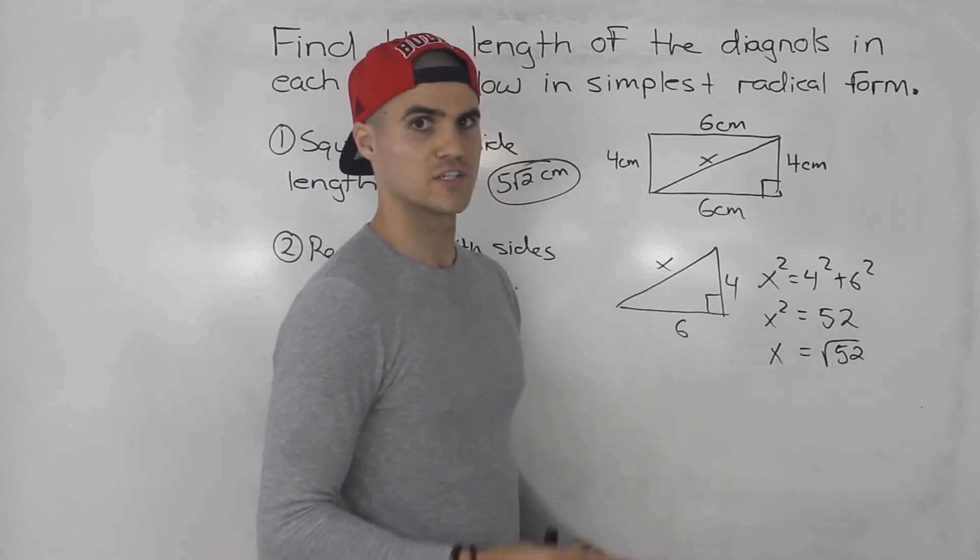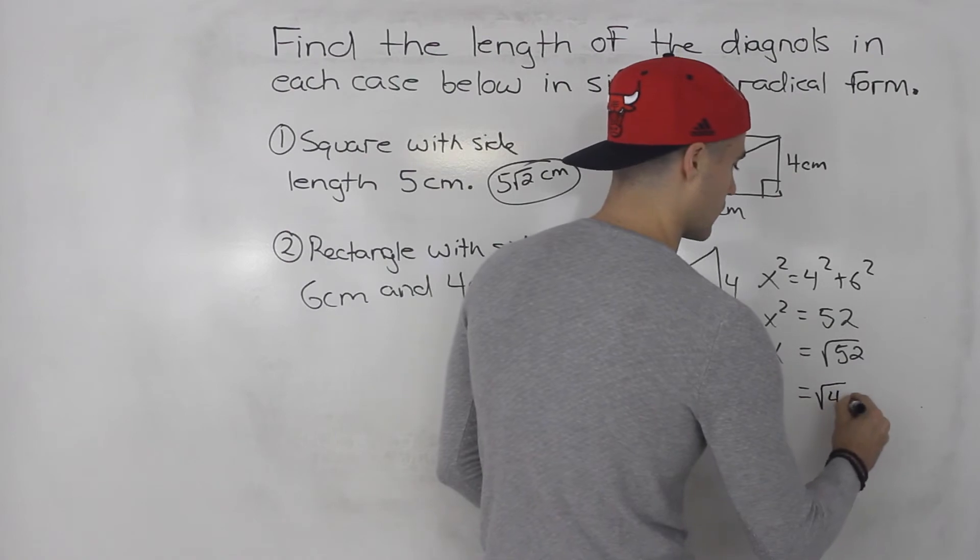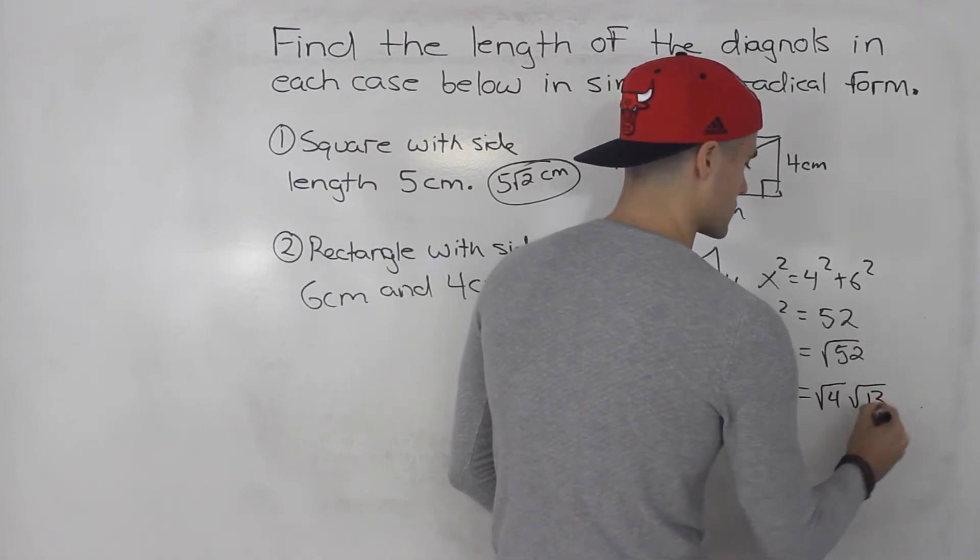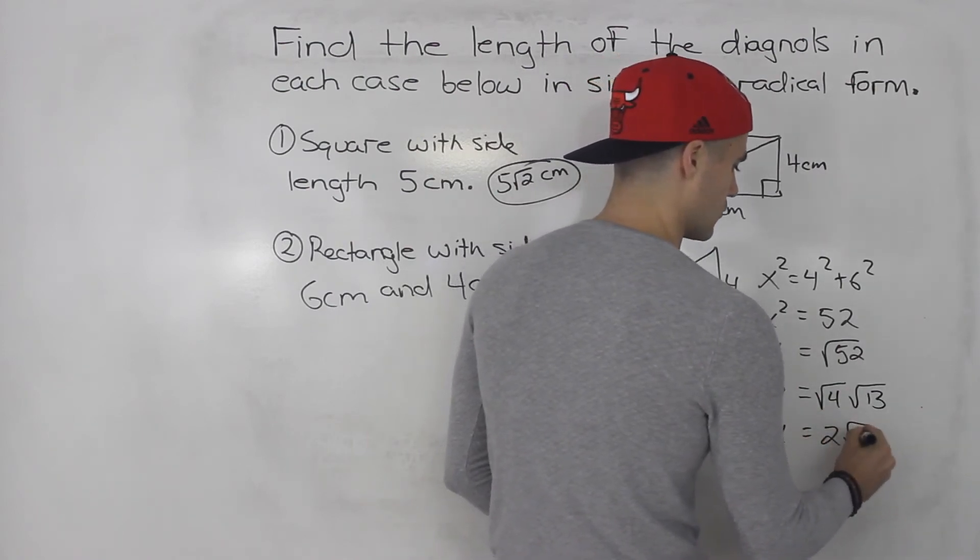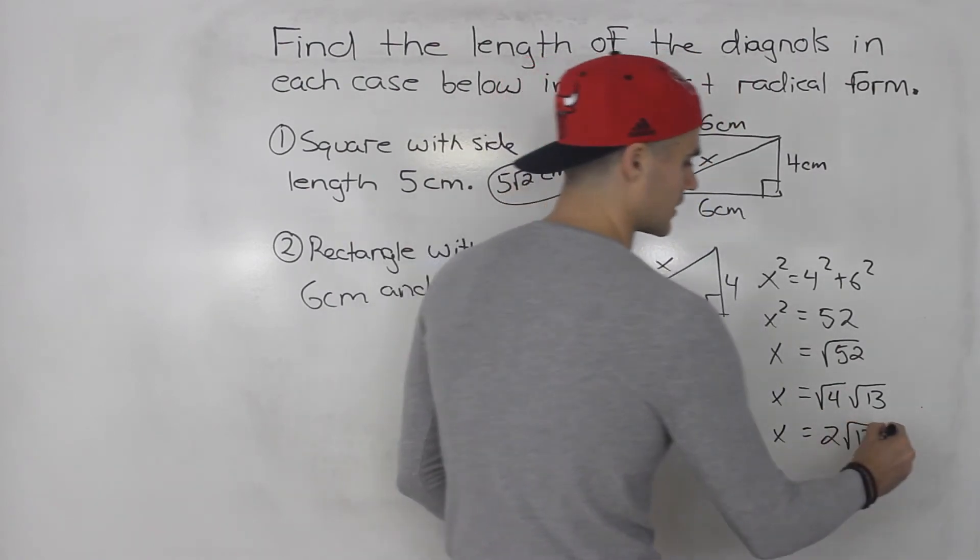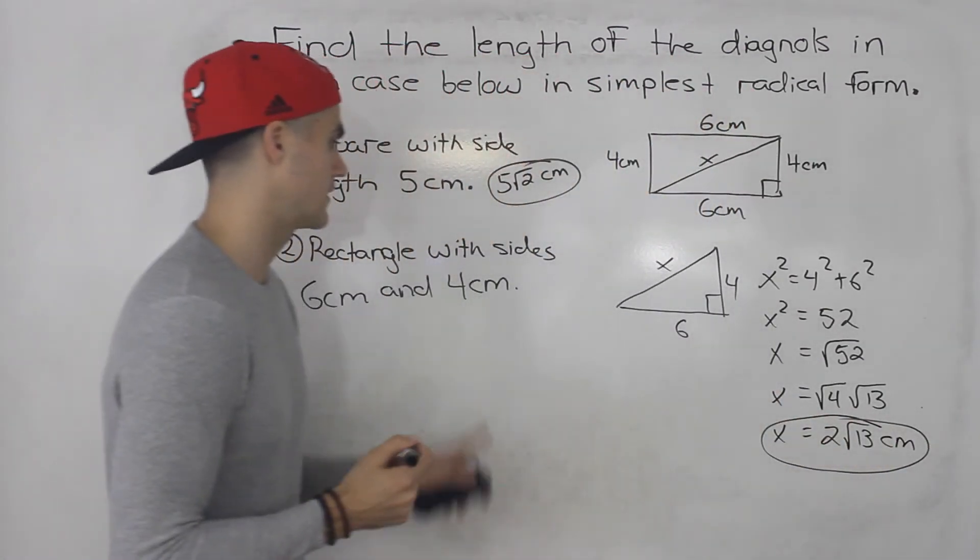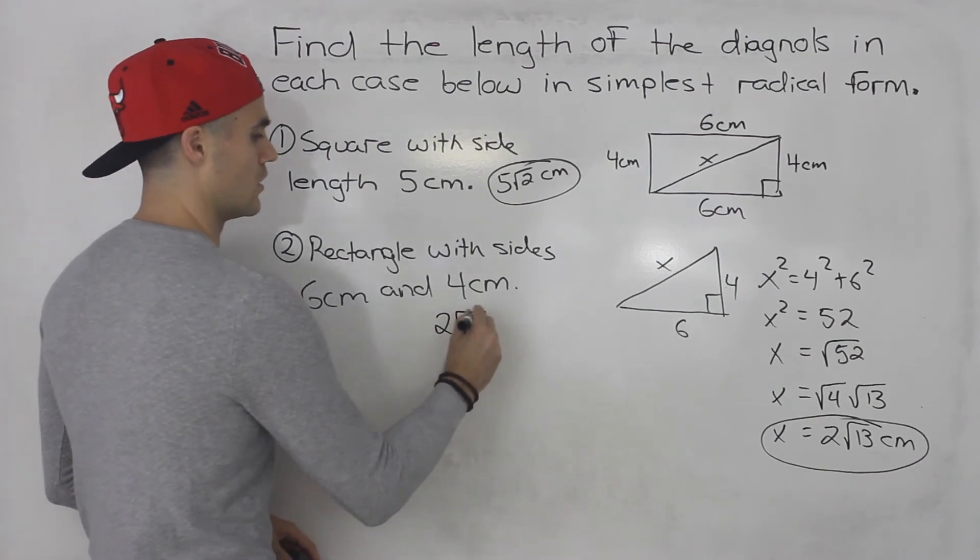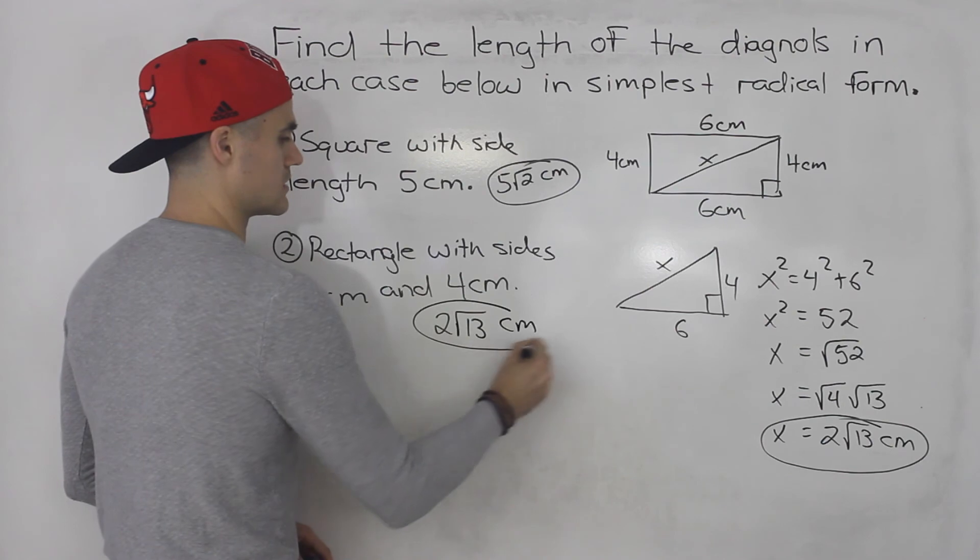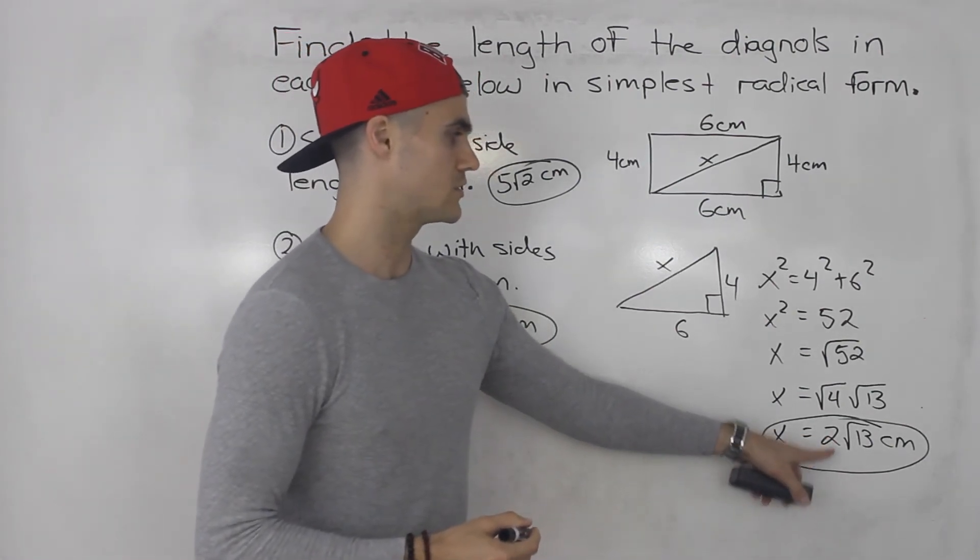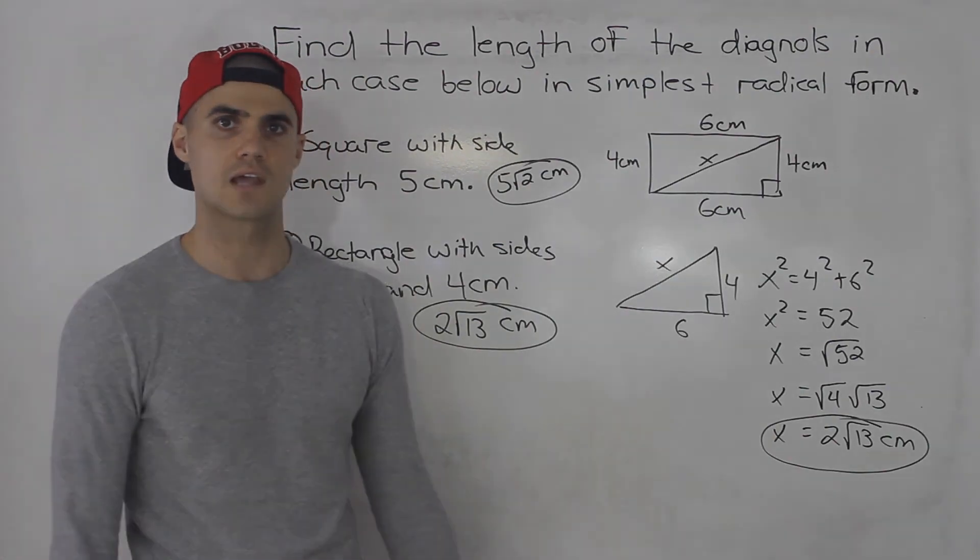But can we simplify root 52 further? And I believe we can. We can actually break it down into root 4 times root 13. And the square root of 4 is 2. Root 13 we can't further break down. So that is the answer. That's the length of the diagonal in the second scenario, 2 root 13 centimeters. This 2 root 13 and root 52, those are the same thing. If you plug it in the calculator, you'll get the same decimal.